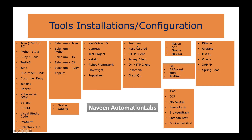Then from an API automation and testing point of view, we have Postman, Rest Assured, HTTP Client, Jersey Client, OKHttp, Insomnia, and GraphQL — there are a lot of other third-party libraries available and we can add those too. Then different configurations with respect to build automation like Maven and Gradle, NodeJS — how exactly we are going to configure those things with respect to Java, NodeJS, or other programming languages.